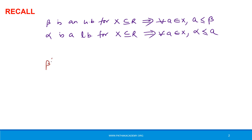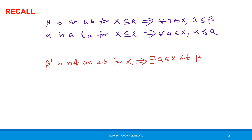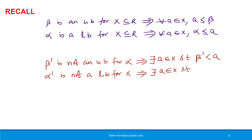Beta prime is not an upper bound for X means there exists A in X such that beta prime is less than A. And alpha prime is not a lower bound for X implies that there exists A in X such that alpha prime is greater than A. These are the concepts of upper bound and lower bound.